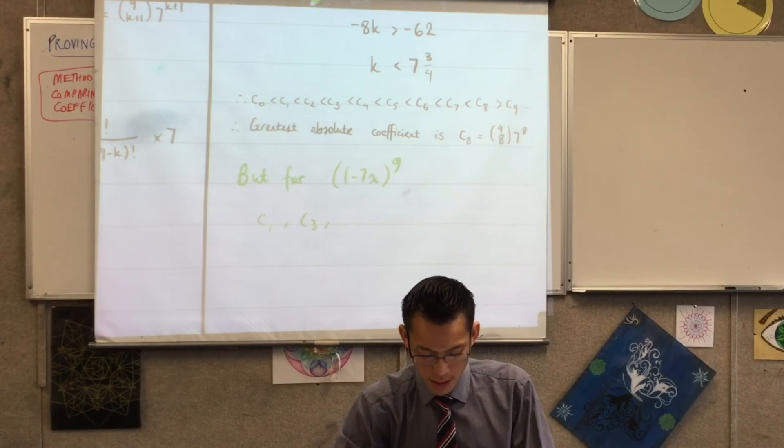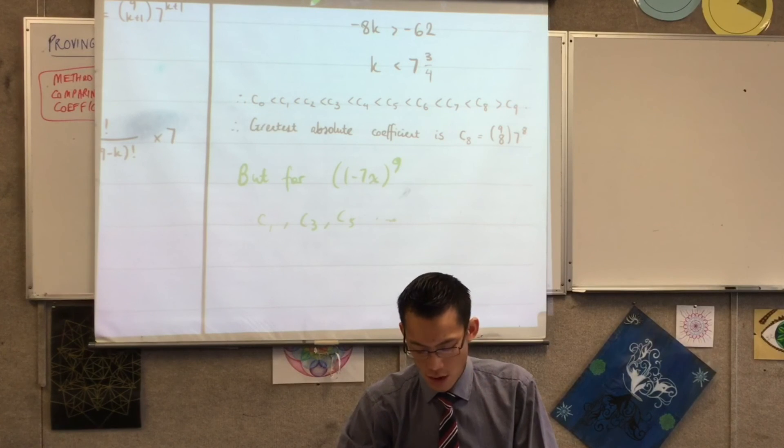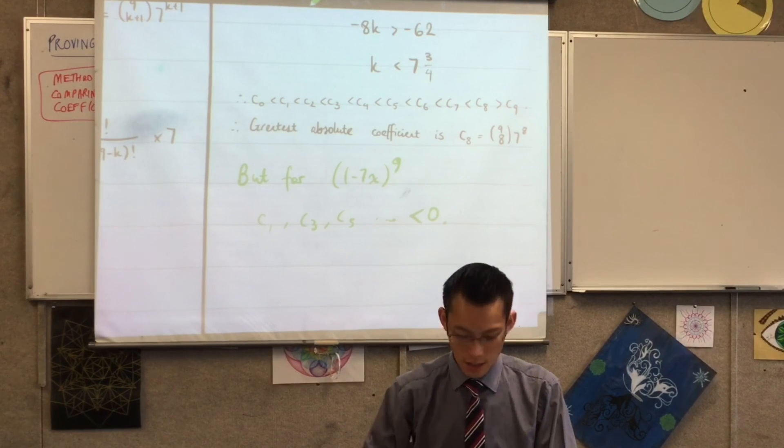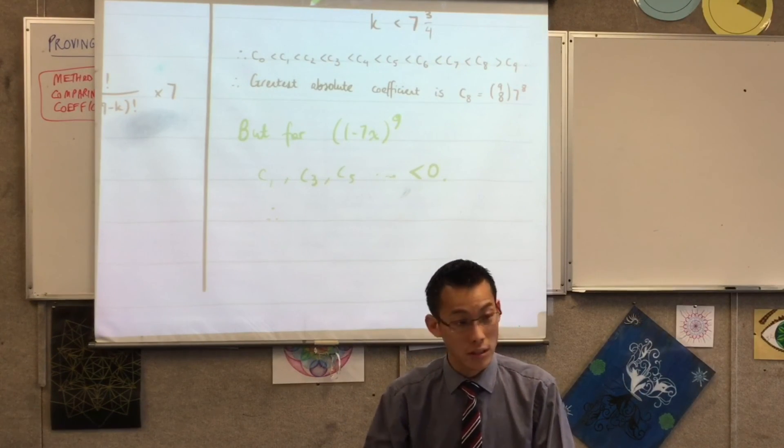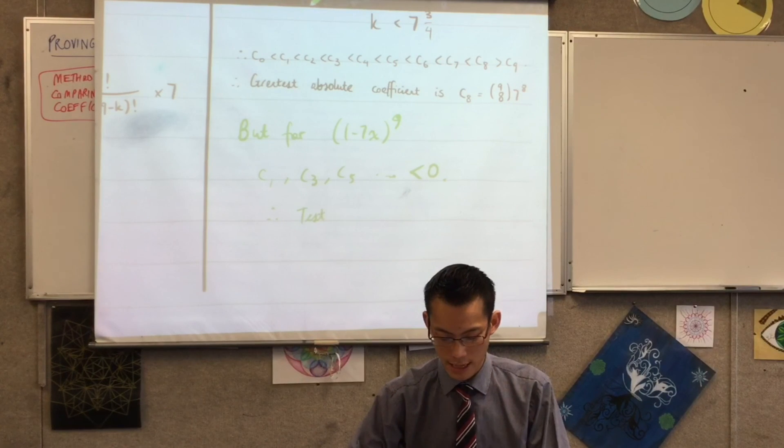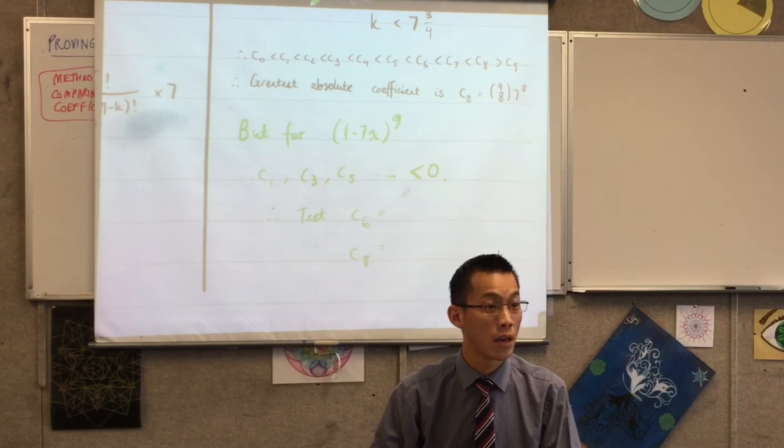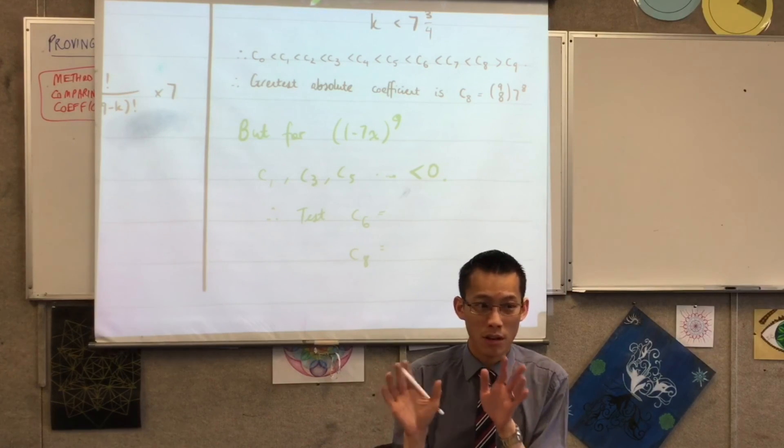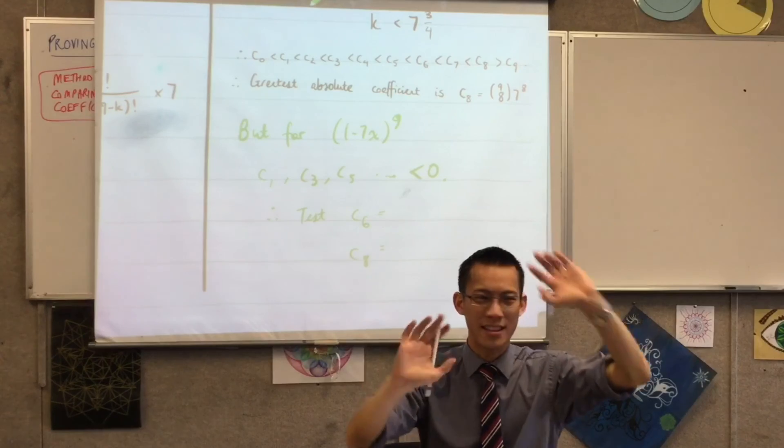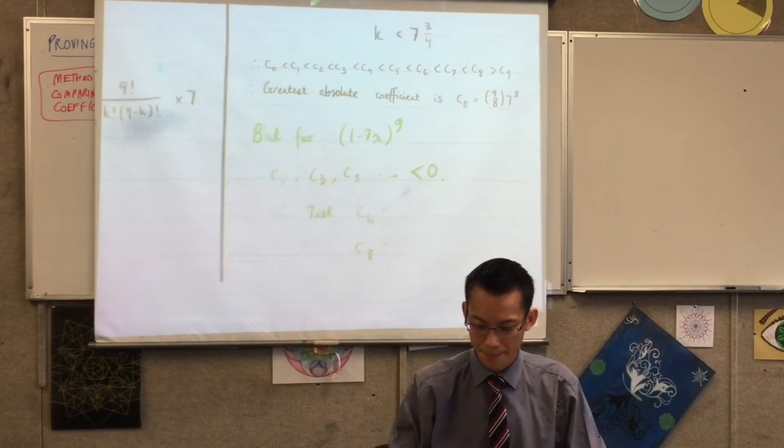I'll say C1, C3, C5, et cetera. They're all negative. So I'm like, therefore, I'm going to test. I'm literally going to say test C6, test C8, or whatever it happens to be. So I'm going to leave the inequality. I'm not going to muck around with like, oh man, which way did they go? Some are negative. That's just confusing. Don't need to worry about it.